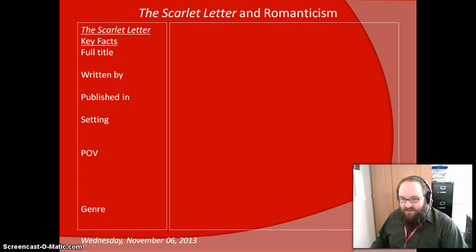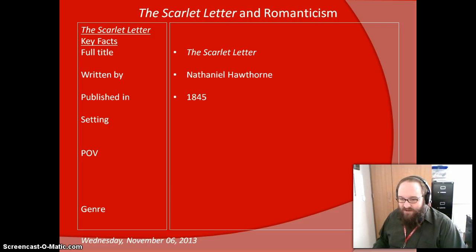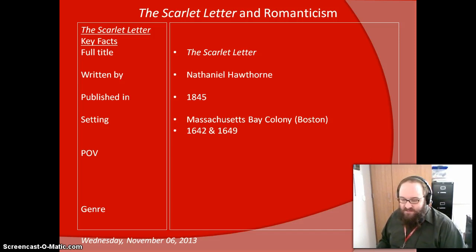Let's start with some key facts. The Scarlet Letter — its full title was just The Scarlet Letter. Unlike Frederick Douglass, there's no lengthy alternate title. It was written by Nathaniel Hawthorne, published back in 1845. It's set in the Massachusetts Bay Colony in Boston in the years 1642 and 1649. There's a time jump of seven years between chapters — between chapters five and six, I believe.